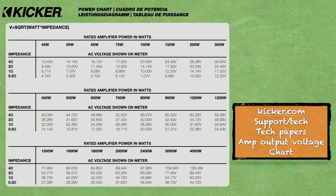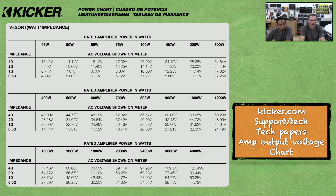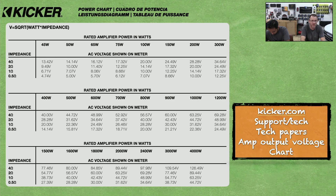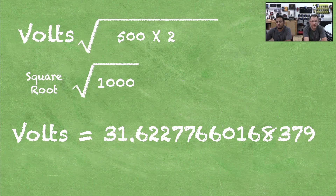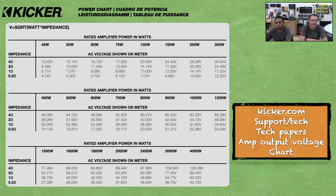If you hate math, don't worry — Kicker has made a cheat sheet. Go to kicker.com, click the Support/Tech tab at the top, then go to Tech Papers. Near the top in alphabetical order you'll find the Amp Output Voltage Chart. Simply pick the power across the top, pick the impedance you're using, and find the intersection. At 500 watts and 2 ohms, it shows 31.62 volts — exactly the same number the math gives us. That's all there is to it; this will get your gains much better than just guessing.